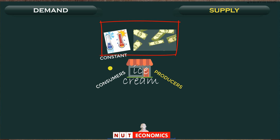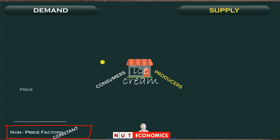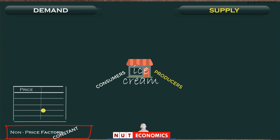We want to focus on the most important determinant behind how many ice creams consumers wish to buy, and we assume that is the price of the product itself. From the very beginning, we are not saying price is the only thing that affects consumers — all these other things we call non-price factors, the first key term you need to remember. We assume these non-price factors to be constant, and then we simply want to build the relationship and see how consumers react to different prices in terms of how many ice creams they wish to buy.